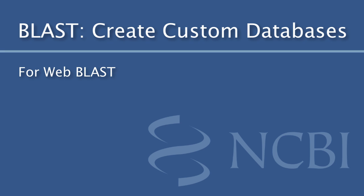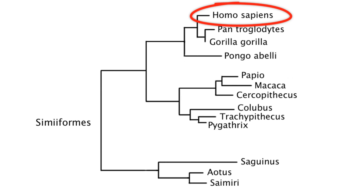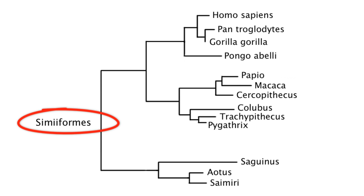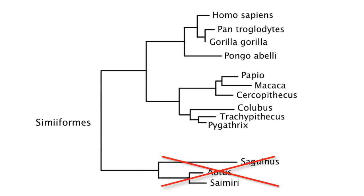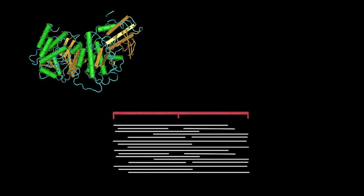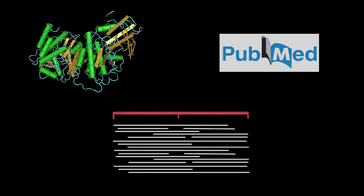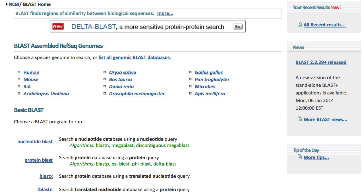An often overlooked feature of WebBLAST is the ability to search a database tailored to your needs. Maybe you want to search just one organism, or a larger taxonomic group, or exclude certain organisms. Maybe you want to search only proteins with solved structures, or nucleotide sequences of a given length range, or only sequences with PubMed references. All this can be accomplished in a few quick steps, and the more concise BLAST output not only makes it easier to find the hits you want, but may allow you to analyze more queries in a single search because of the smaller database.